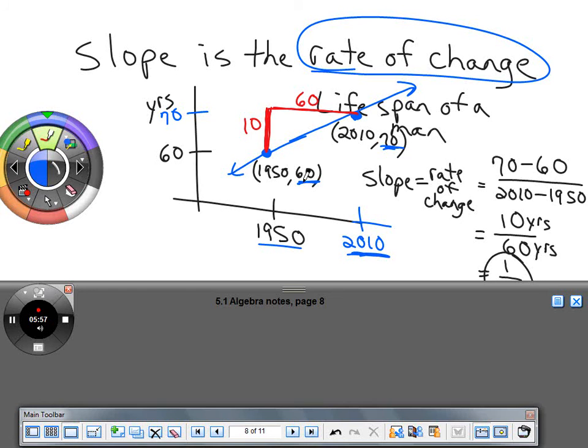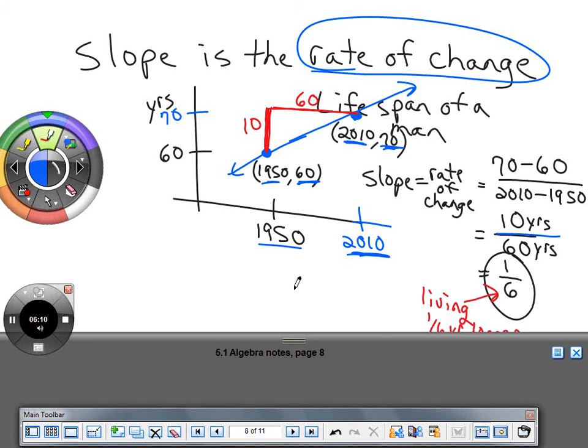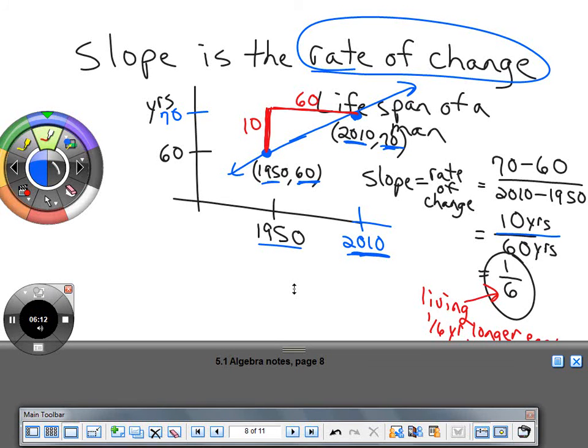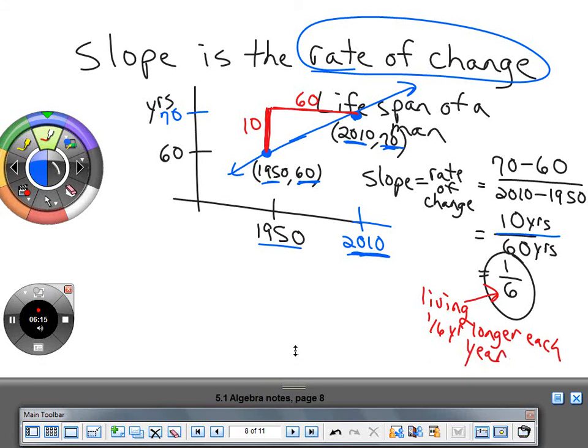To figure out the rate of change in lifespan, we subtract the Y's: 70 minus 60 equals 10. Then subtract the X's: 2010 minus 1950 equals 60. The rate of change is 10 over 60, or reduced, 1/6. This means every single year, we're increasing the lifespan by one-sixth of a year. That's the slope - up 10 years for every 60 years, which reduces to 1/6.